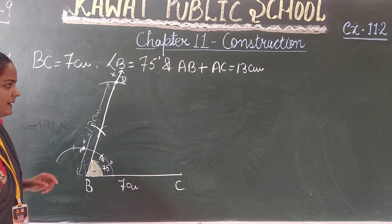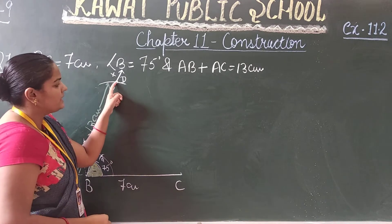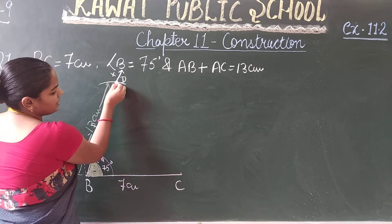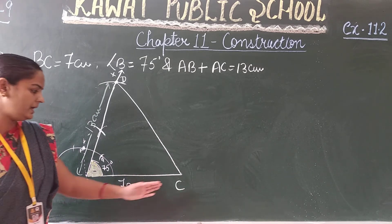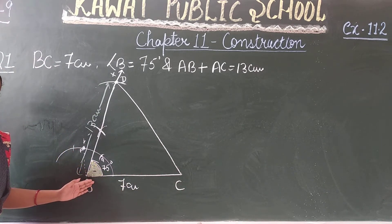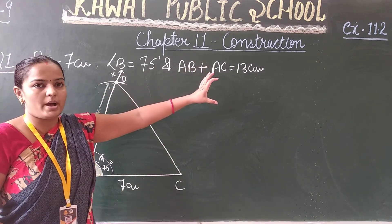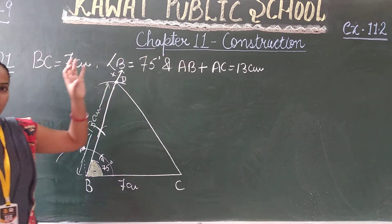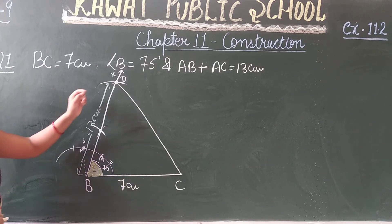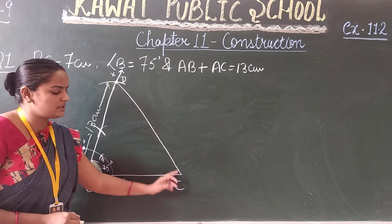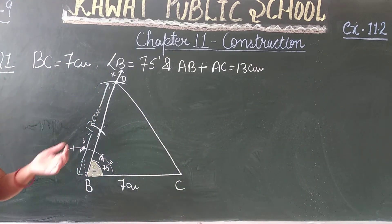Now what do we do? Join this line. Join CD. Next step, again I am repeating: first you have to draw base line BC 7cm, then base angle 75 degrees. Now AB plus AC, the sum of two sides, we have to mark 13cm.